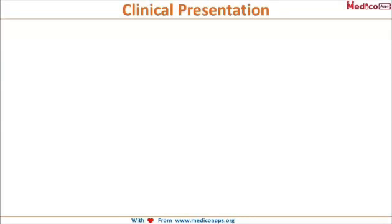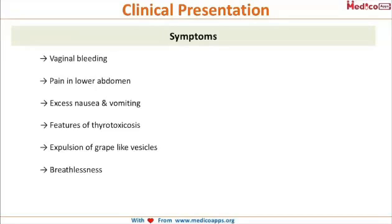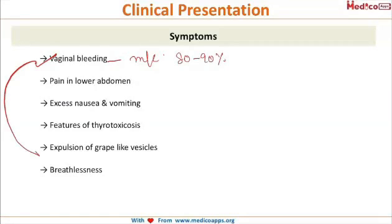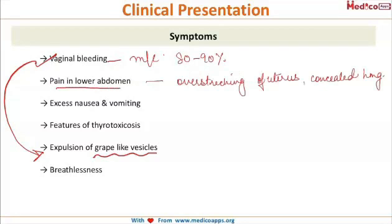Clinical features are very important, so let's summarize them. These patients usually present with vaginal bleeding — that is the most common symptom, seen in almost 80 to 90 percent of cases — and sometimes this vaginal bleeding is associated with expulsion of grape-like vesicles. There may also be varying degrees of lower abdominal pain, due to either over-stretching of the uterus, concealed hemorrhage, or uterine contractions.